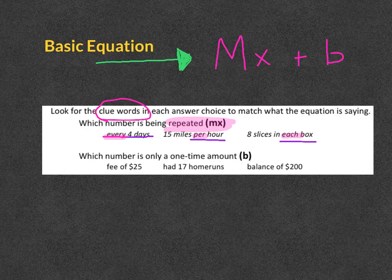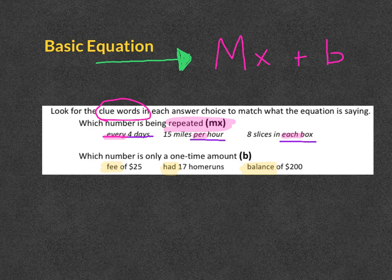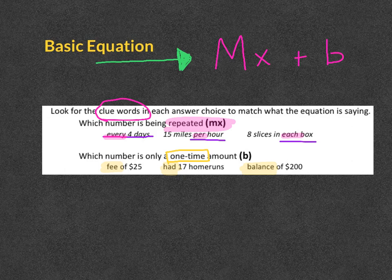Then there'll also be a one-time amount. Some clue words for that could be if there's a fee. It might say that you had a certain amount, or it could say there's a balance, or it could say that you also start with. And that's going to tell you your one-time amount, which would represent the number that's being added or subtracted at the end.